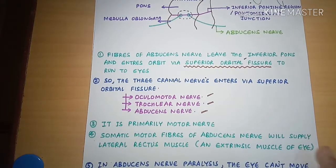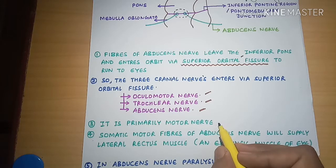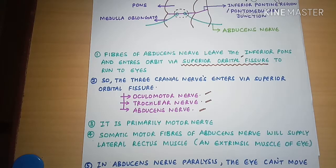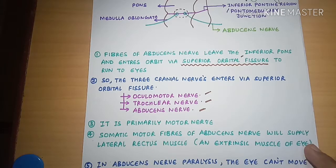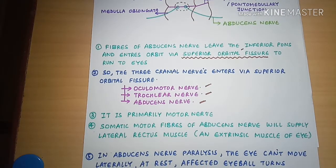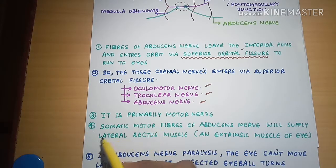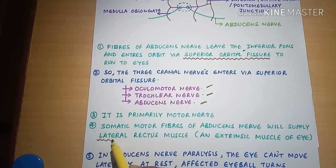The abducens nerve is primarily a motor nerve — it is not a sensory nerve and not both sensory and motor. The somatic motor fibers of the abducens nerve supply the lateral rectus muscle, an extrinsic muscle of the eye.